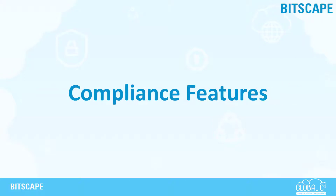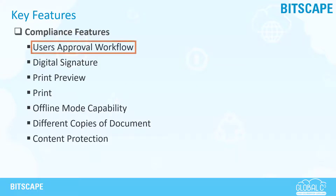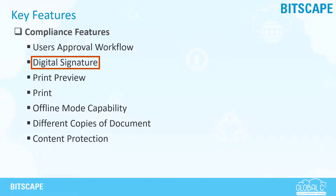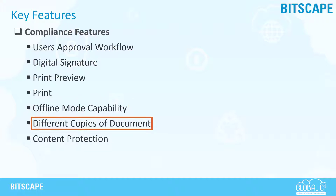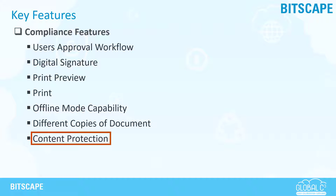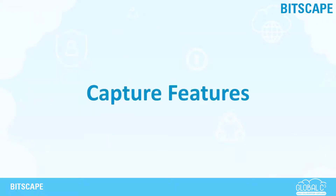First comes the compliance feature. Based on business process requirements, you can easily configure the user's approval process. Bitscape Vault allows user authentication during document approval or review. You can check the print preview before printing the document, and print different versions of the document and audit logs. Bitscape Vault has an offline mode capability so that you can synchronize local PC, cloud-based storage, or file share. It allows users to print controlled, uncontrolled, and master copy of the document, and helps protect content before and after printing.